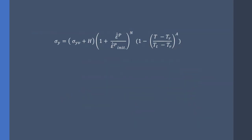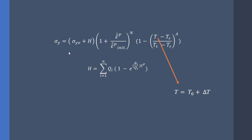Let's see some examples. Suppose that I want to model a hardening which is dependent on the strain rate and temperature, and our parameters are as shown here. If I want to use the UMAT subroutine, the Jacobian matrix for this type of hardening is going to be a major problem. However, with the VU hard subroutine we can easily define this type of hardening.